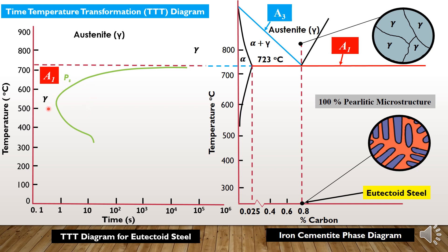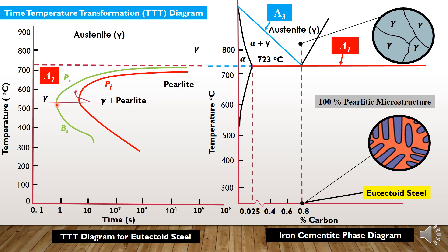To the left of this curve, we have metastable austenite. This line indicates the start of pearlitic transformation, and this line indicates the end of pearlitic transformation. To the right we have pearlite, and in between these two curves we have austenite plus pearlite. Below the nose of this curve, we have Bs, which indicates the start of bainitic transformation, and Bf which indicates the finish of bainitic transformation.